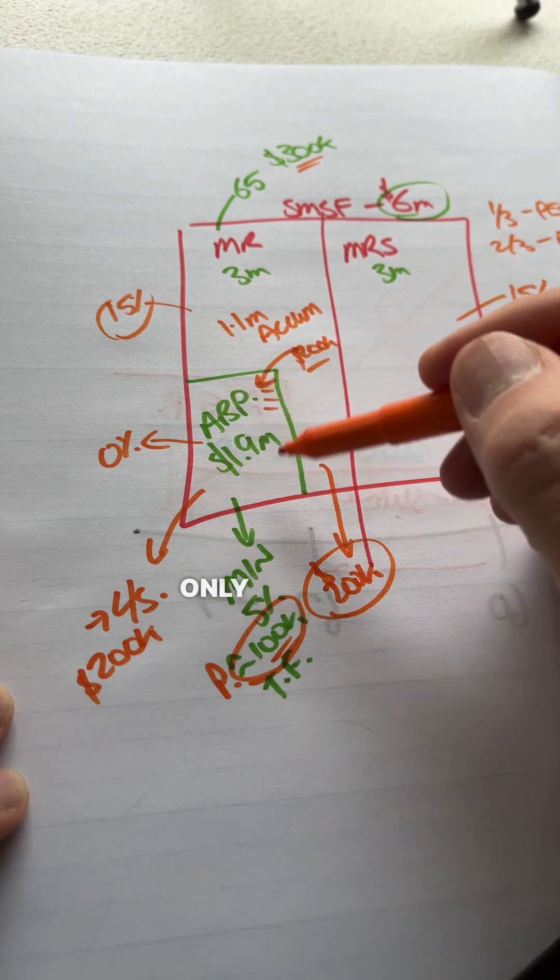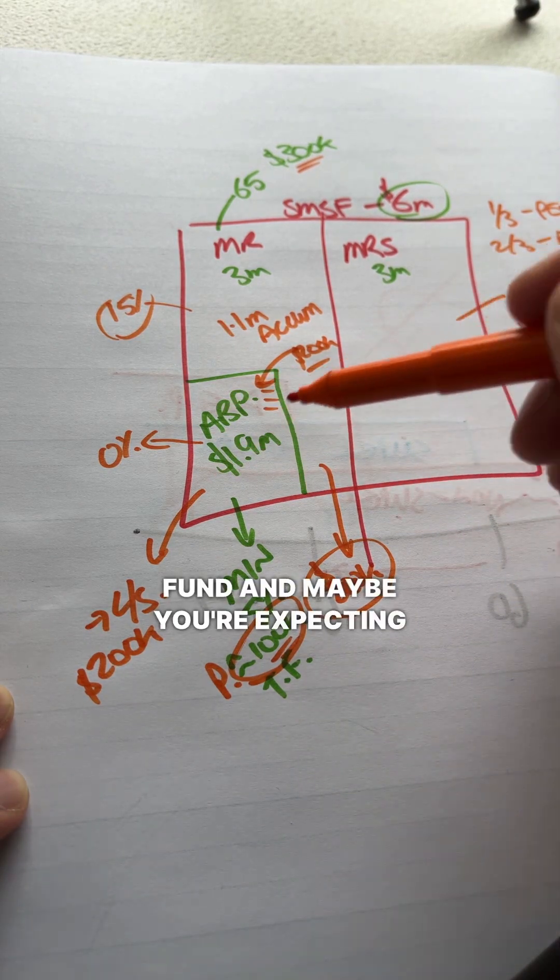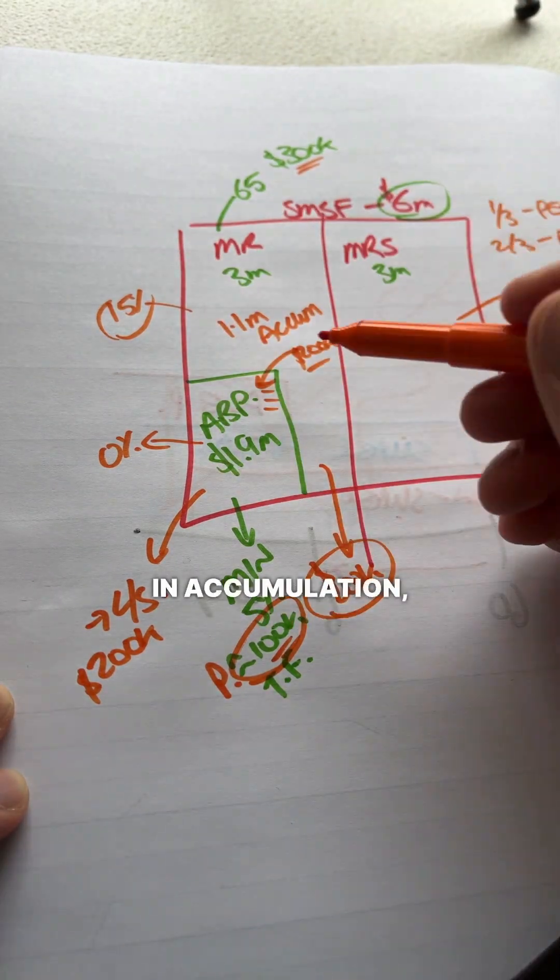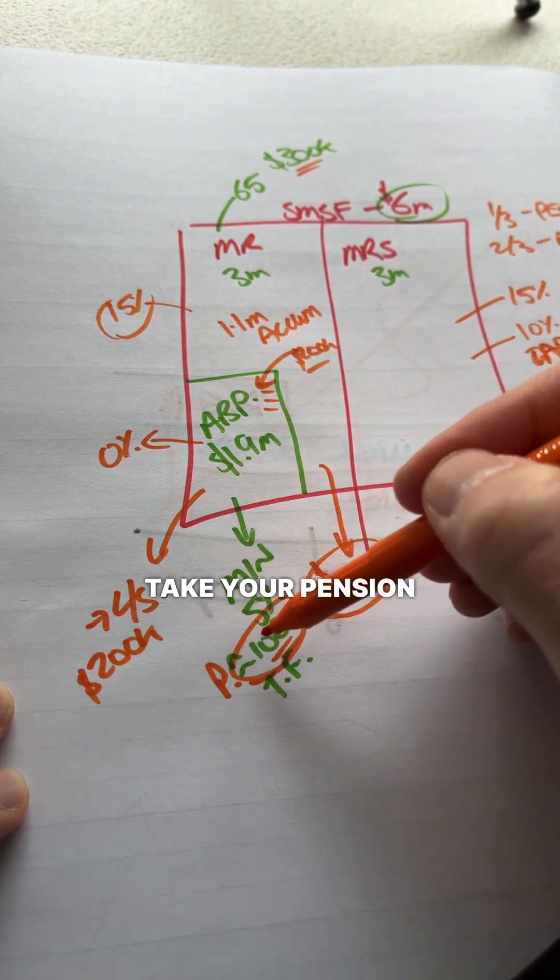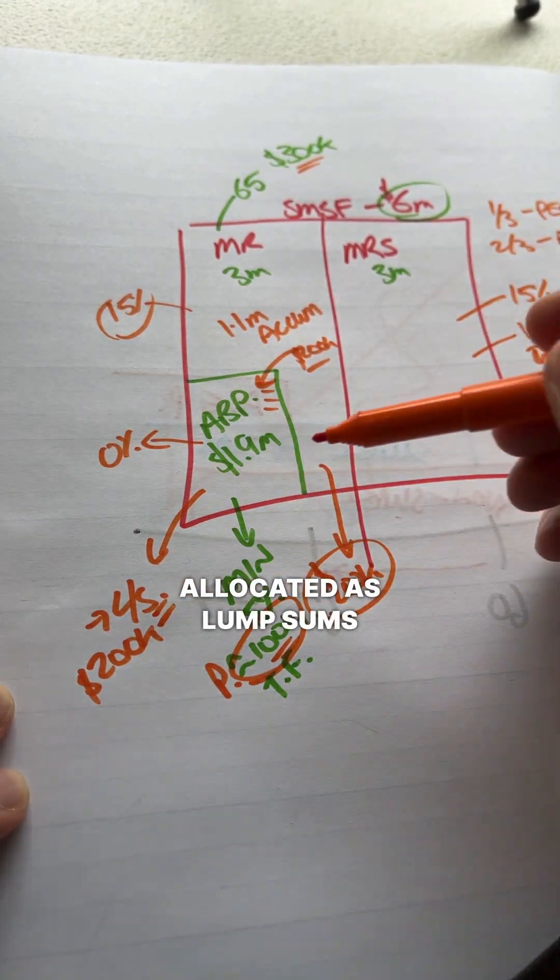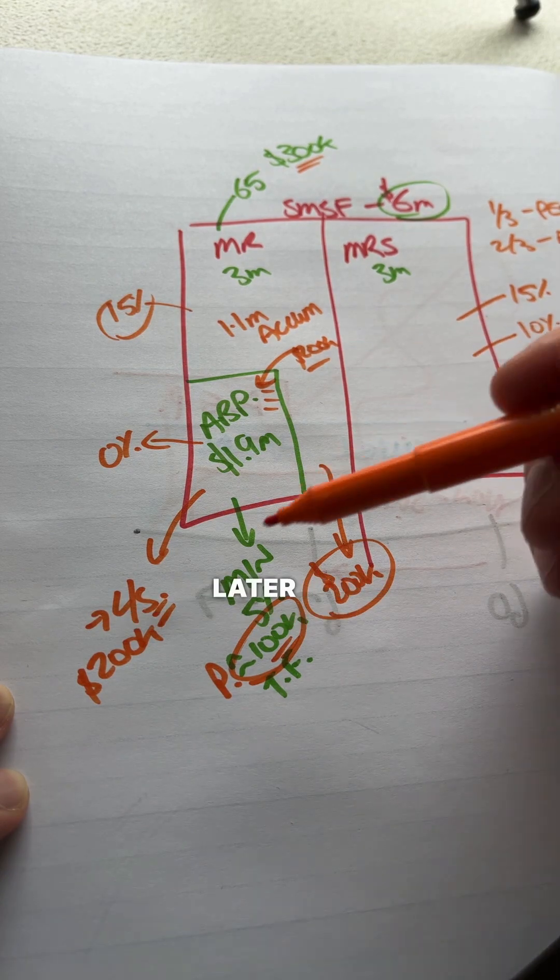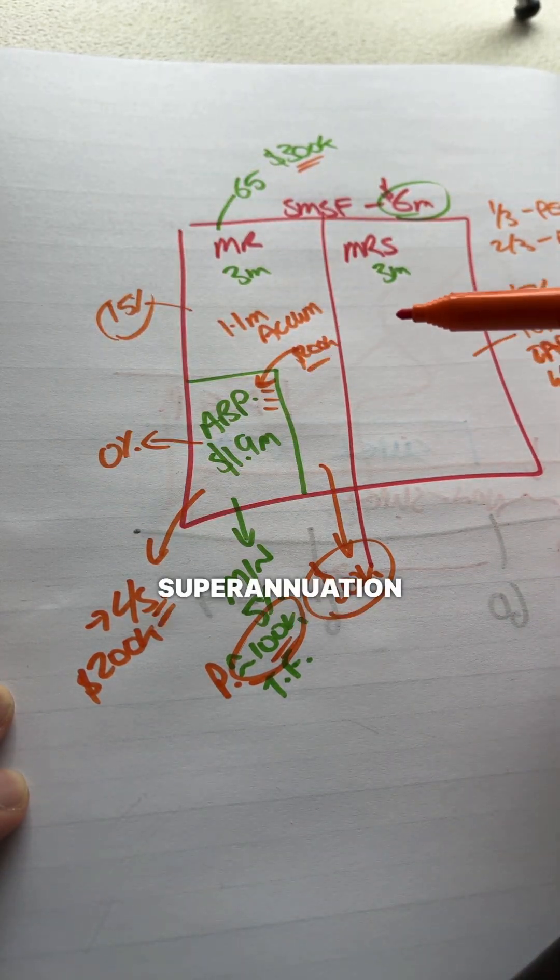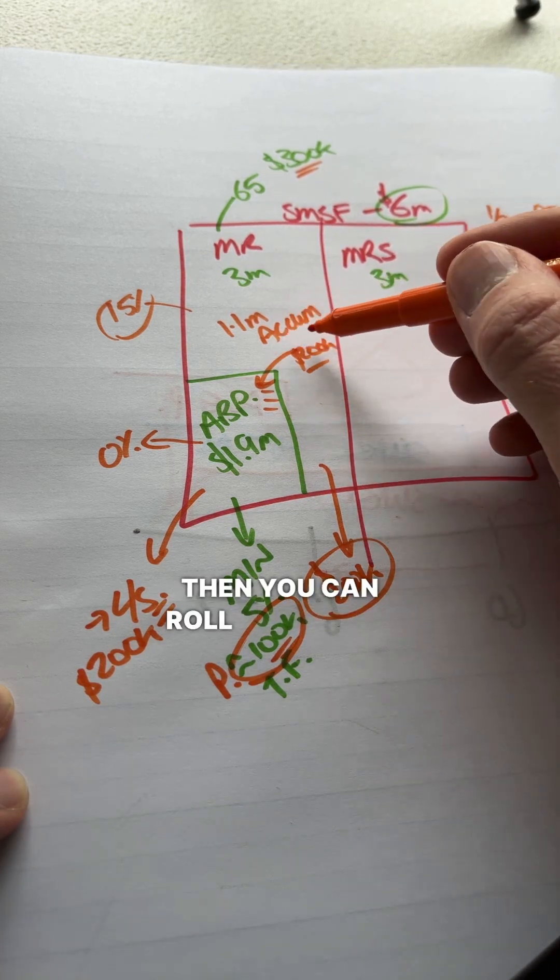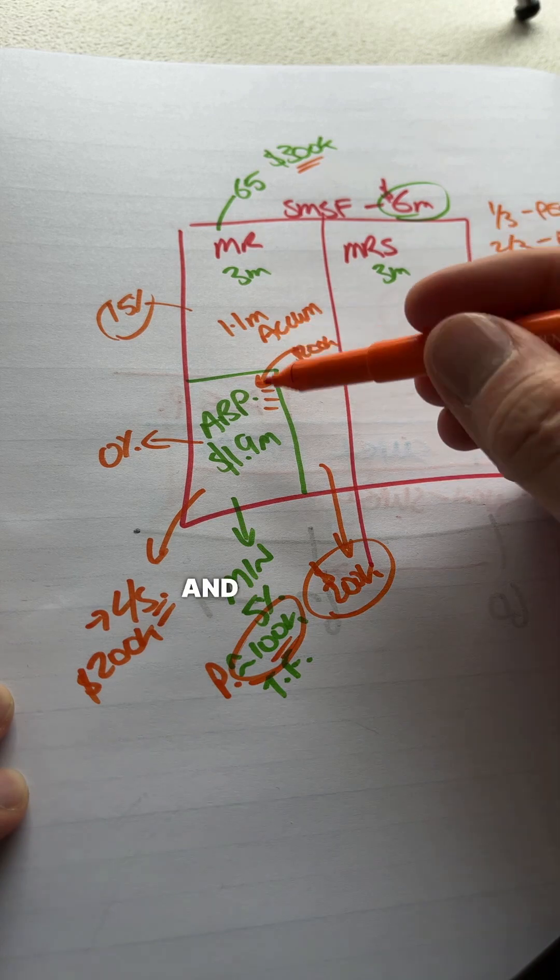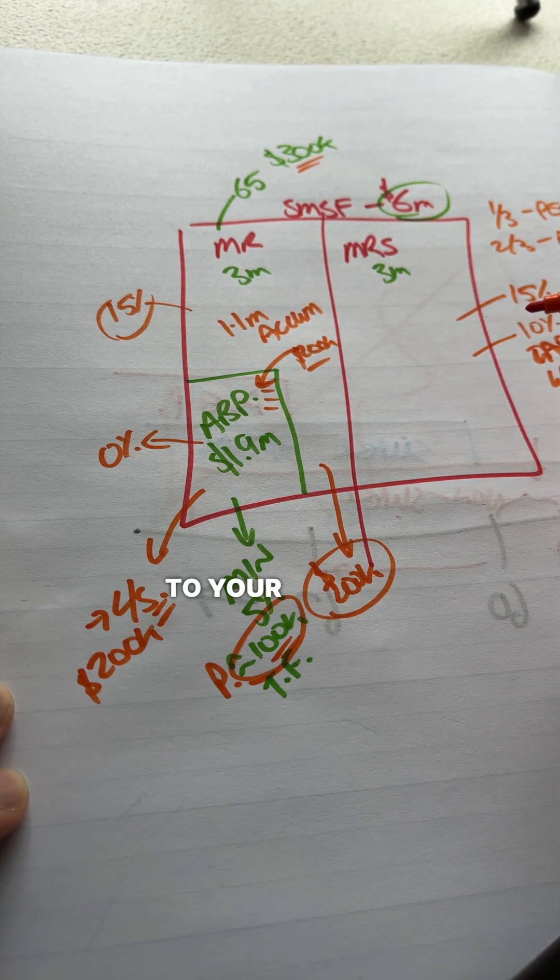But if you had only had this one pension fund and maybe you're expecting an inheritance or something like that, you didn't have all of this extra money in accumulation, you might want to take your pension payments and then anything over and above the minimum pension payments allocate as lump sums. Because if you get some inheritance later on, you do a downsizer later on, if you end up getting extra money into your superannuation fund later on, then you can roll over some of that from accumulation into account-based pension and top back up to your unused cap.